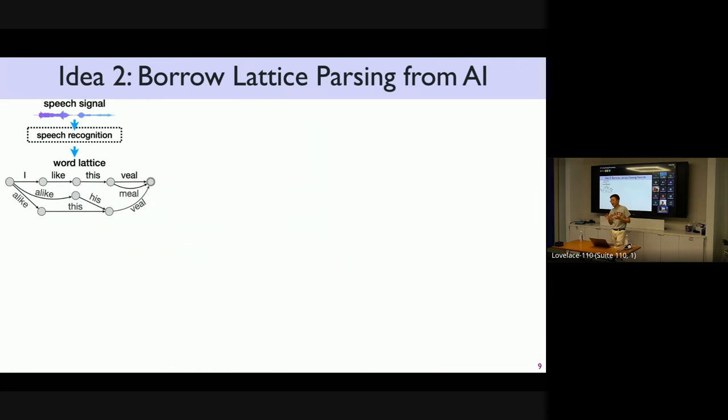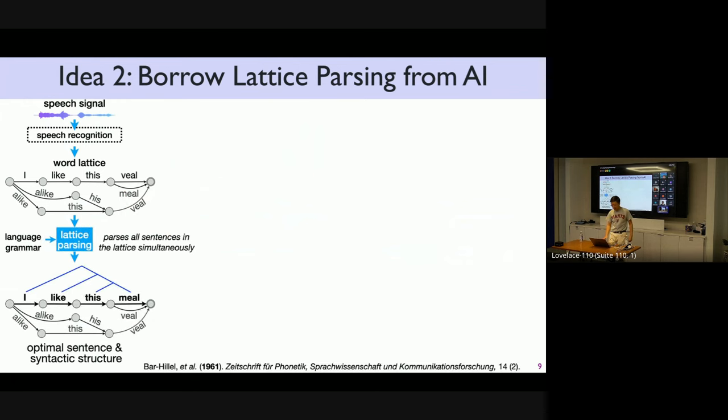Luckily, there is something called lattice parsing from the classical NLP literature. And that's from 1961. As I said, if you do speech recognition, at least in the old days, you need a word lattice because there are a lot of alternatives. You put all these things together in a word lattice. And then you use an algorithm called lattice parsing. You're given lattice and a grammar, like English grammar encoding grammaticality. And then you can parse all these sentences simultaneously without enumerating one by one. In a very short amount of time, you can find the most grammatical, the most likely, the most plausible sentence.